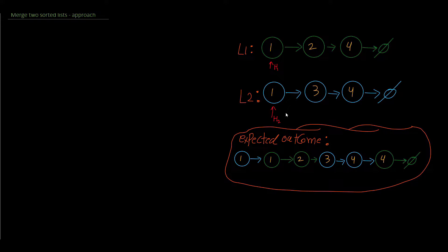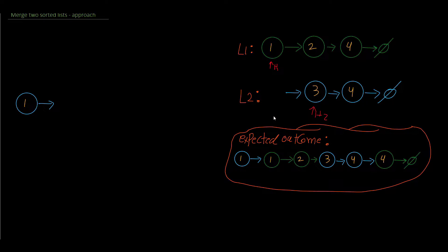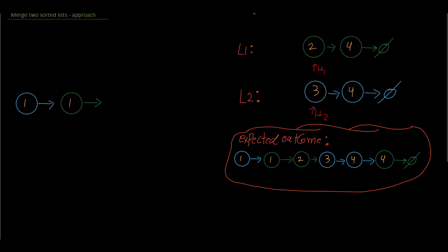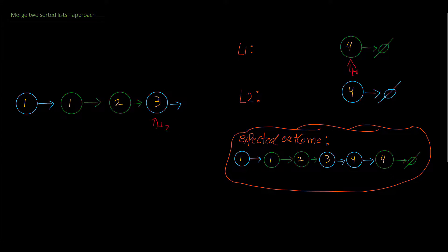Since both heads are equal we pick one — it doesn't matter. Head two comes in and we compare head one with head two again. Head one is smaller so we take the node head one is pointing to and move head one. We repeat: head one's node is smaller so we take it and move head one. Now comparing four with three, we take three.